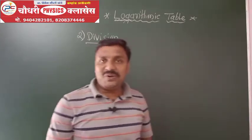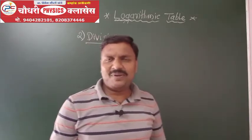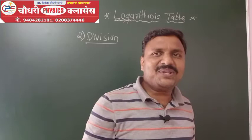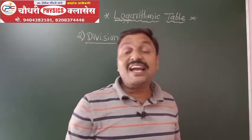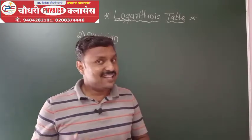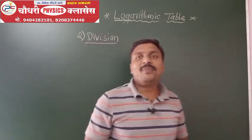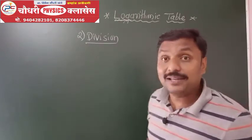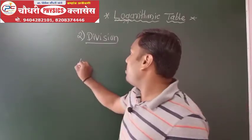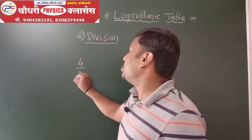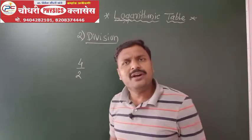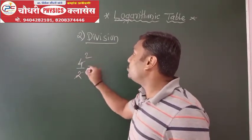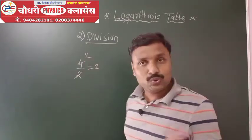Let's take a look at the logarithmic table and understand the concept. Suppose I say 4 divided by 2 — is this division complicated? No. 4 divided by 2, the answer is 2.